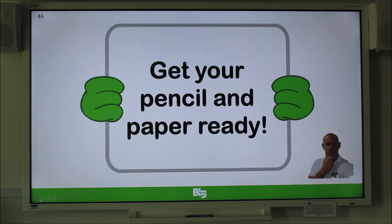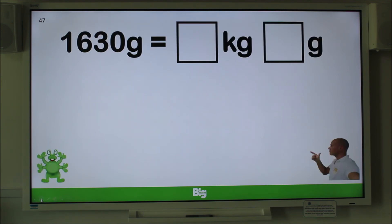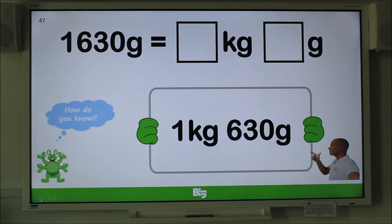Have a pencil and paper ready? Here comes question 7 — remember to explain your answer. Now try partitioning 1,630 grams into kilograms and grams. It's easier than you think. Remember to pause the video. Here we are: we have 1 kilogram because we have 1,000 grams, and then 630 grams after that. Did you get it correct? Well done.